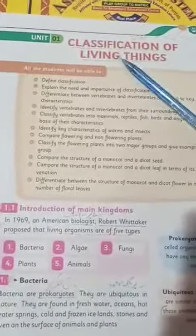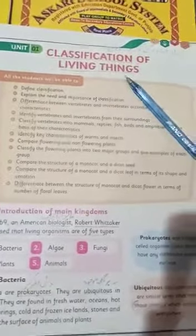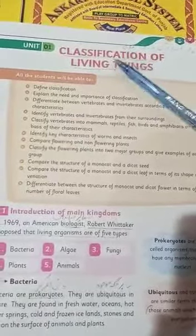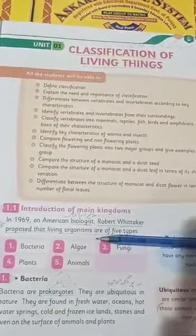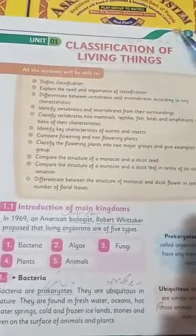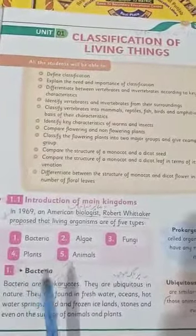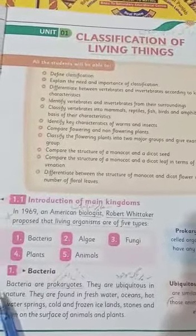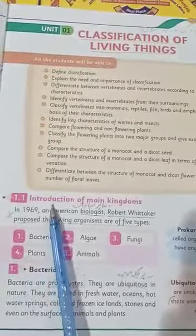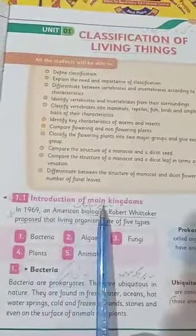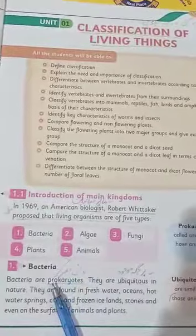Today we are going to start our first chapter, first unit named Classification of Living Things — yani ke jaandar asya ki darja bandhi. You know the procedure: take your pencils in hand, underline the words, write the meanings in your books, and listen to the lecture very carefully so it will help you memorize the work when we do it in your notebooks. Starting from here: Introduction of Main Kingdoms.